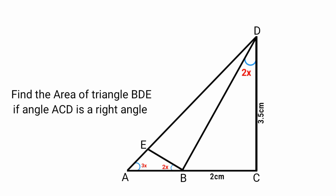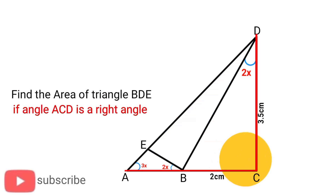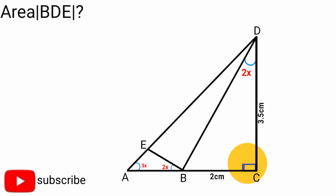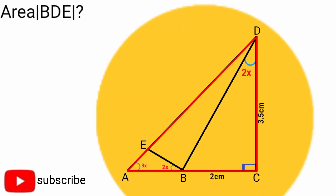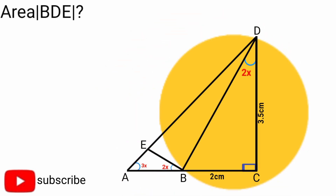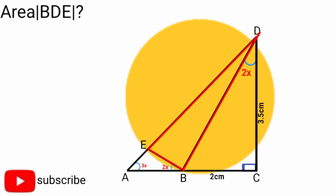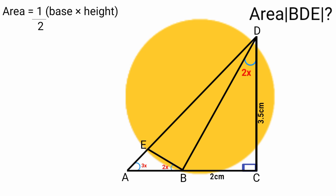Hello viewers, welcome back once again to another interesting maths question. Today's question from this figure here says: find the area of triangle BDE, if angle ACD is a right angle. Triangle ACD is a right-angle triangle, and also triangle BCD. We are asked to find the area of triangle BDE. The general formula for the area of a triangle is half base times height, but to know the base and height we must know the length of the sides and the angles of triangle BDE.